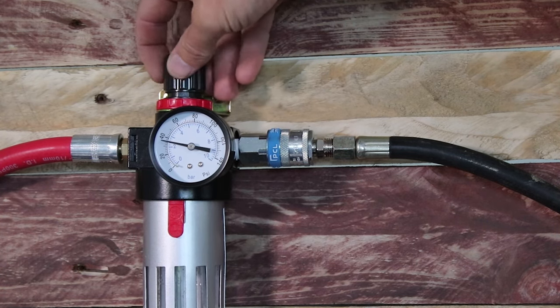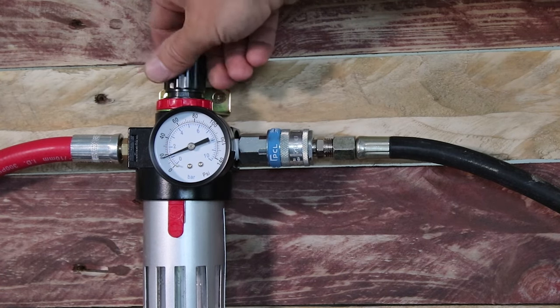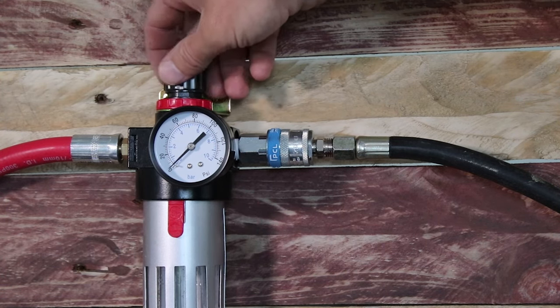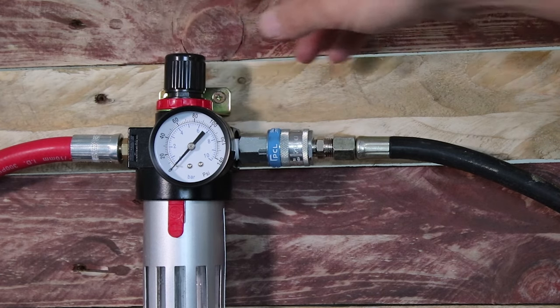Start off by closing the air supply regulator until the gauge shows 0 psi, achieved in this instance by turning the adjuster anti-clockwise.